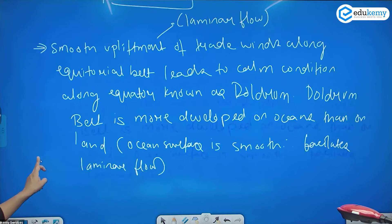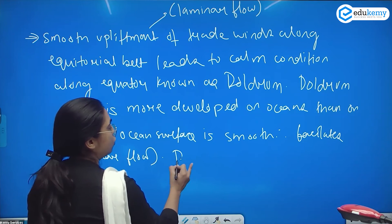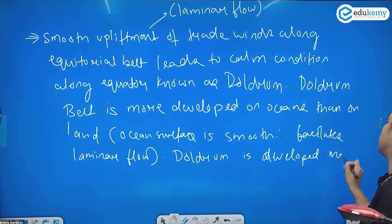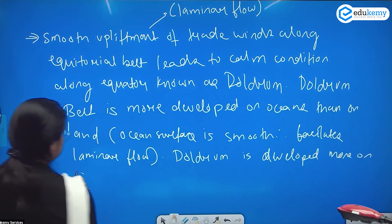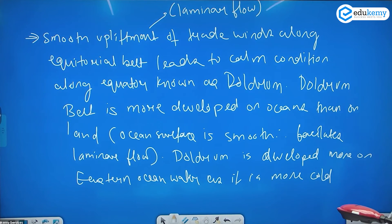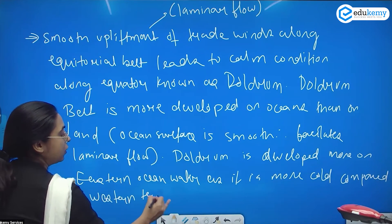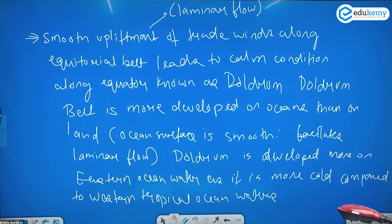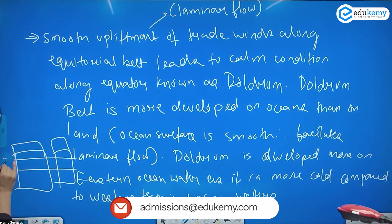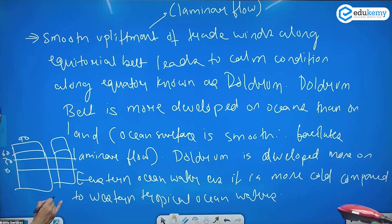Doldrums are developed more on the eastern ocean waters compared to the western tropical ocean waters. This is because the eastern ocean waters in the tropics are more cold compared to the western tropical ocean waters. In the tropics, the eastern side of the ocean is colder, while in the subpolar region, the western side is colder.